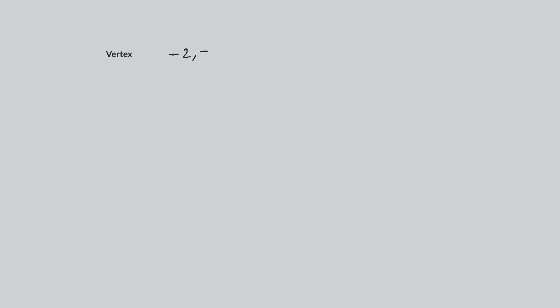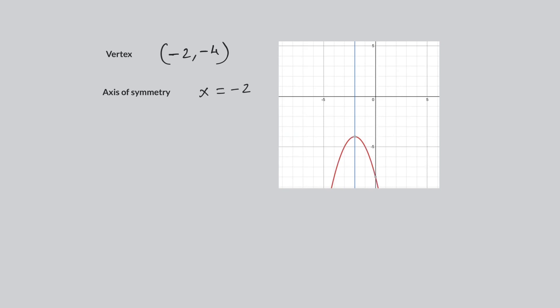From this, the vertex is negative 2, negative 4, and the axis of symmetry is x equals negative 2. The vertex is shown here at negative 2, negative 4, and the axis of symmetry is the line through x equals negative 2.